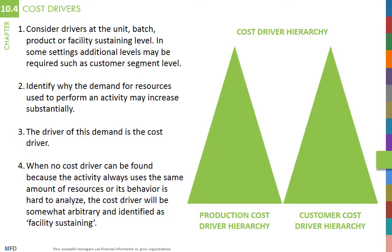An ABC system classifies activities and cost drivers into four types. First, Unit Level Activities: these activities vary with the number of units produced or sold. For instance, more units produced require more labor, or more units sold require more transportation. Second, Batch Level Activities: these activities vary with batches. They consume resources when a new batch is prepared, regardless of the number of units in the batch.